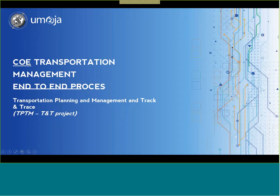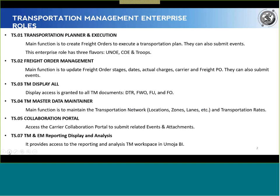Today we're taking a look at the COE transportation management end-to-end process, and we'll see how that differs from the one we saw yesterday on UNOE, so UN owned equipment. Now we remember the roles we were looking at yesterday: TS01 transportation planner and execution, TS02 which is the one we focused on, freight order management, whose main function is to update freight order stages, dates, actual charges, carrier, and freight PO.